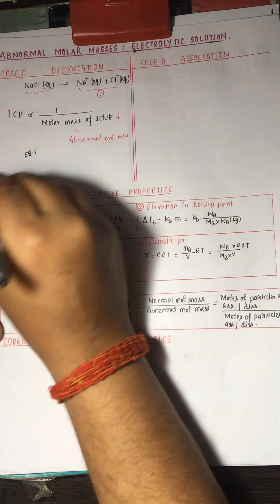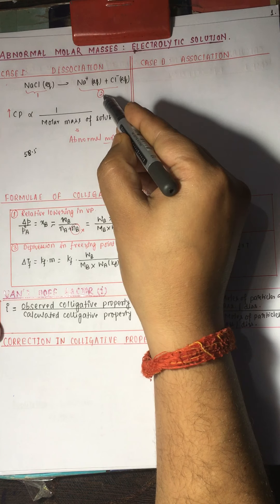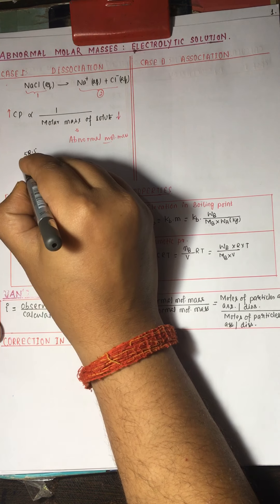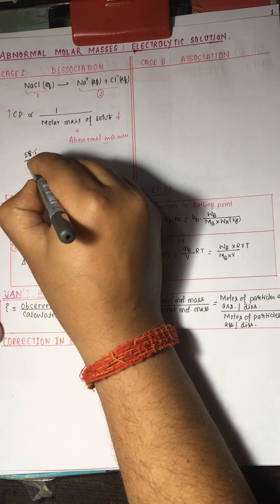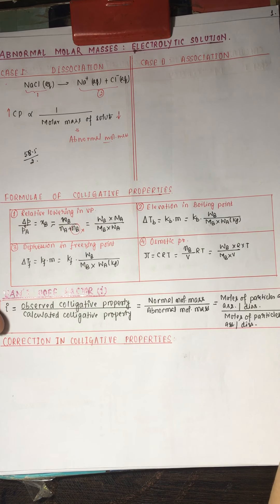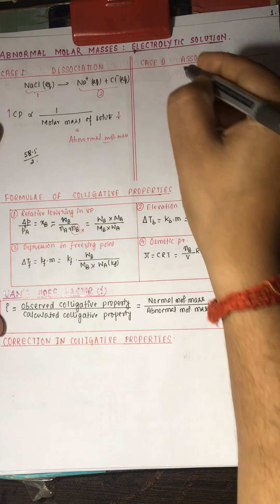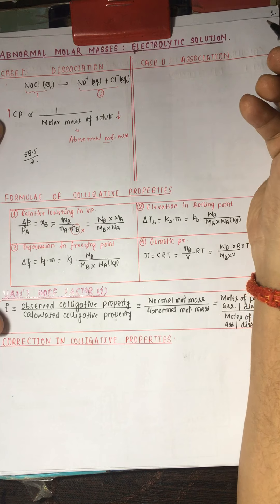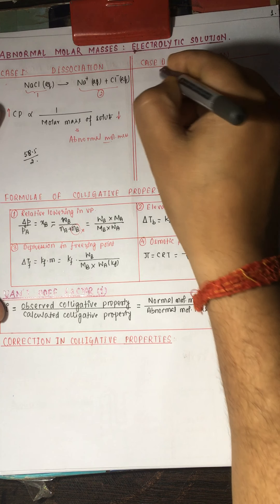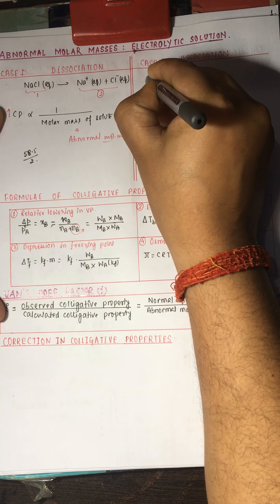The molecular mass of sodium chloride is 58.5. After dissociation it furnishes two particles, so you divide by two — the molecular mass becomes half, approximately 29.25. This is the abnormal molar mass of NaCl in the case of dissociation.